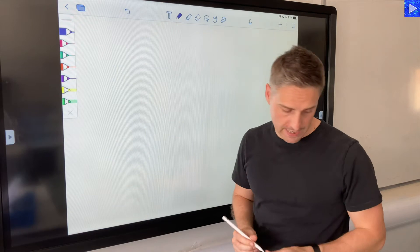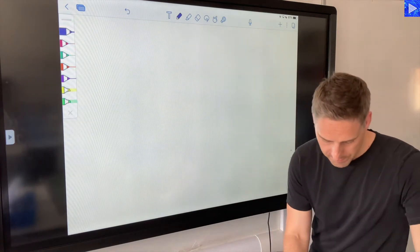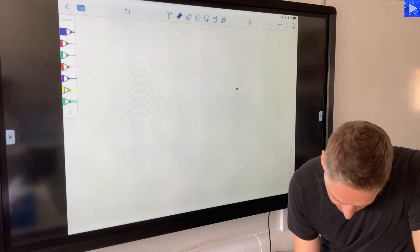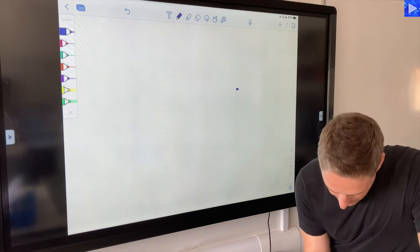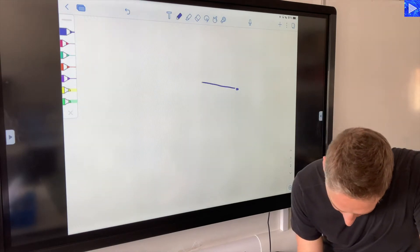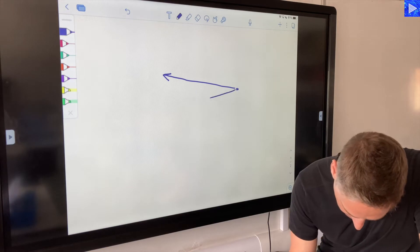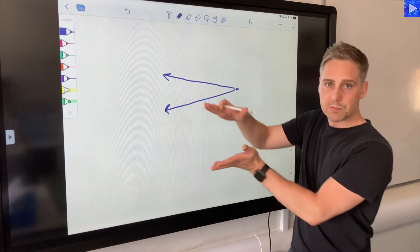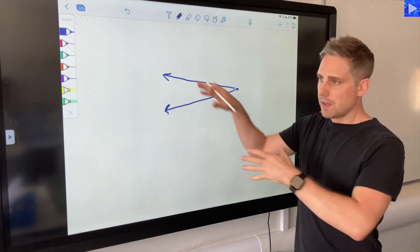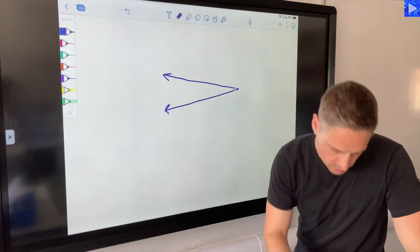So what we have here is if this is our torch over here, we could have something like this where the light is spreading out as it moves away from the bulb. It's spreading out like this and the beam forms a circle, doesn't it, over here. So it forms a circular pattern.